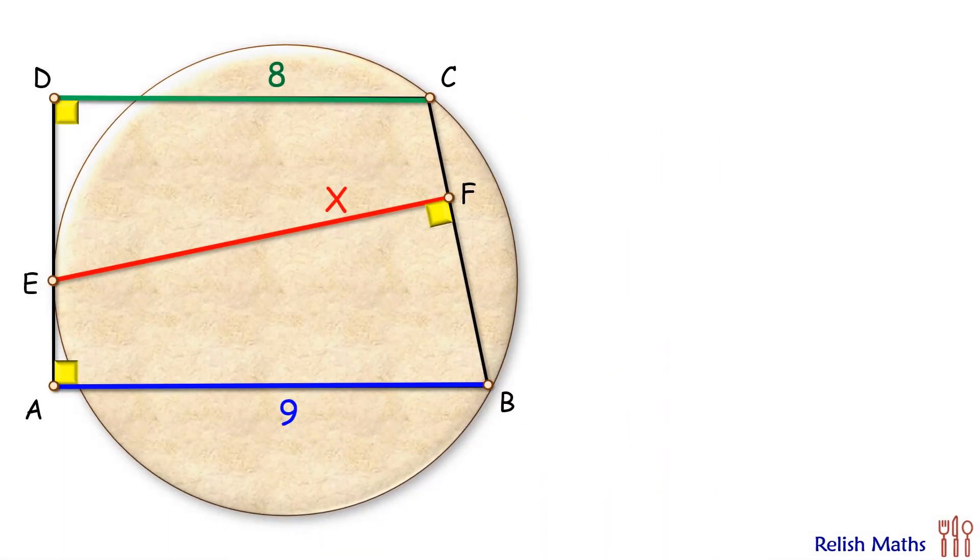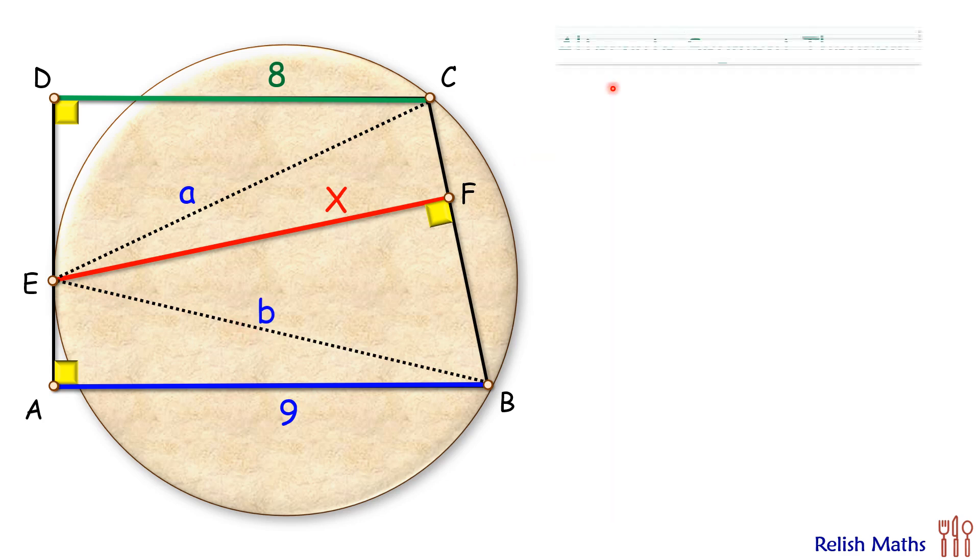Let's check the solution. Let's start by drawing the chord EC assuming its length as a centimeter and chord EB assuming its length as b centimeter. For our solution we'll be using Alternate Segment Theorem which we have discussed in video number 156.